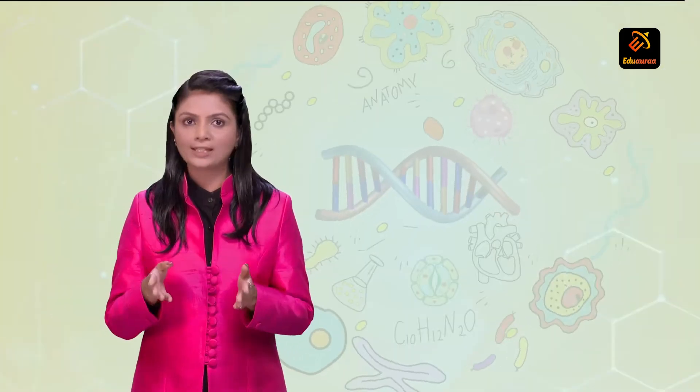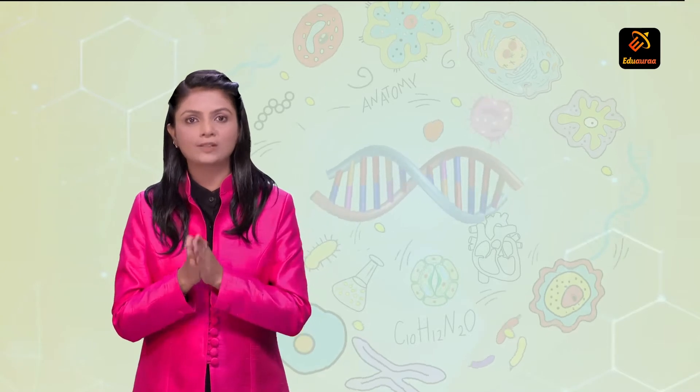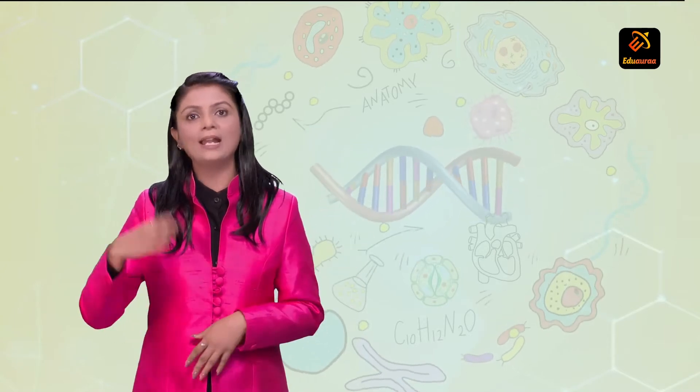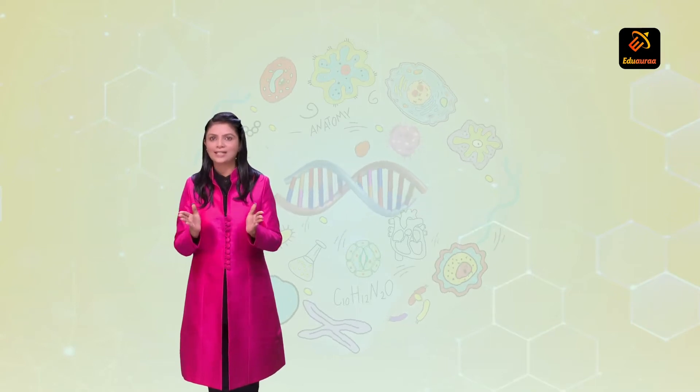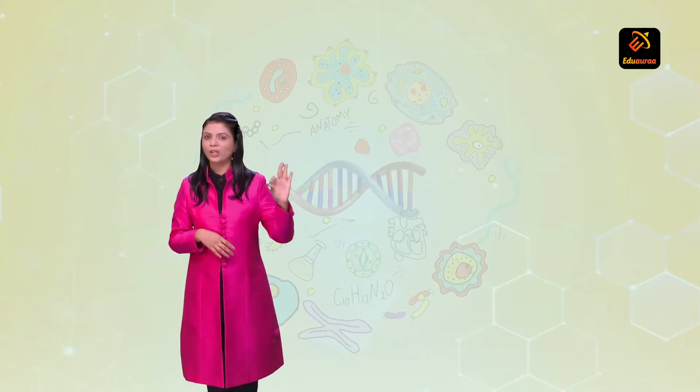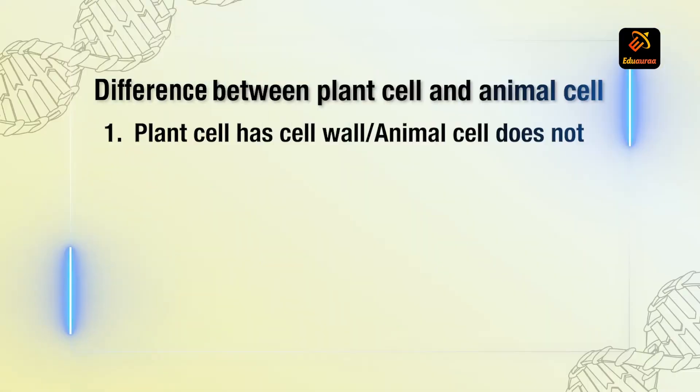Now based on that your two kinds of cells, plant cell and animal cell. So what are the differences between plant cell and animal cell? Three major differences. Plant cell has cell wall, animal cell does not have cell wall.